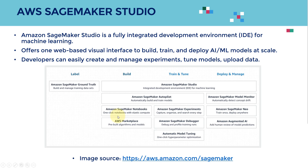You can also leverage Amazon SageMaker Experiments to capture and organize all your experiments in one place. You can use Amazon SageMaker Debugger to debug the model as it's being trained. And you can perform automatic model tuning — a one-click hyperparameter tuning job — to tune your model's hyperparameters and improve its performance and robustness.